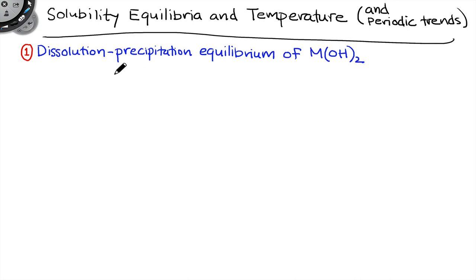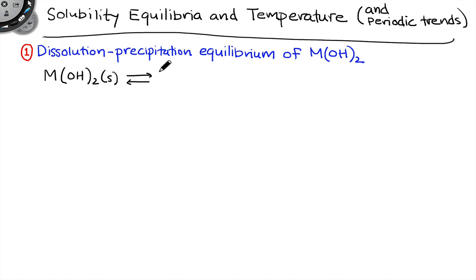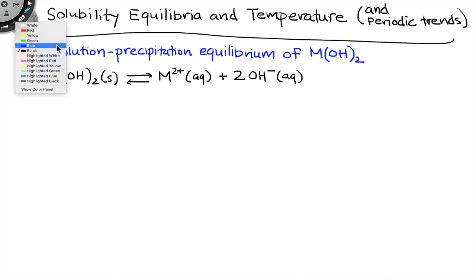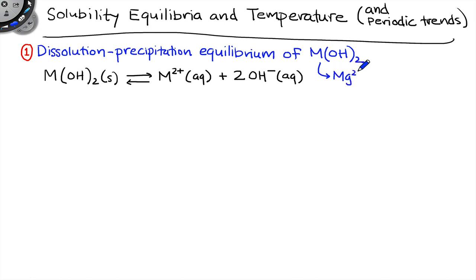Let's begin by reviewing a little bit about dissolution, precipitation, equilibria, and KSP in the particular context of these group 2 metal hydroxides, MOH2. Let's first write a balanced chemical equation for the dissolution and precipitation processes. Dissolution is the forward direction — the solid metal hydroxide dissolves to form aqueous metal cations, M2+, and hydroxide anions, OH-. The reverse direction is called precipitation, since this is the formation of the solid from the aqueous ions. The three metal cations we're going to investigate are Mg2+, Ca2+, and Sr2+, and these are all group 2 or alkaline earth metal elements.